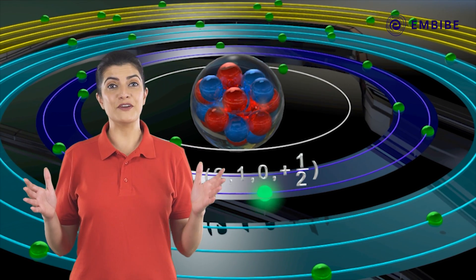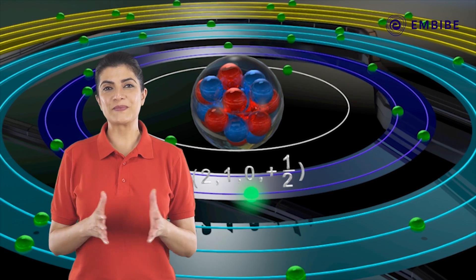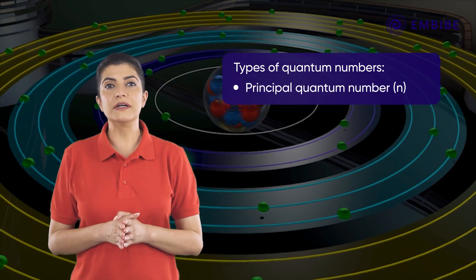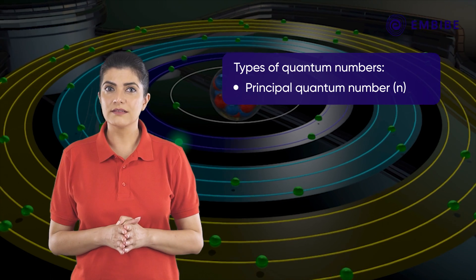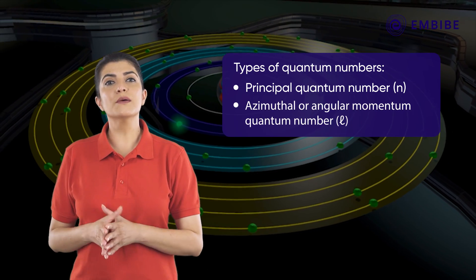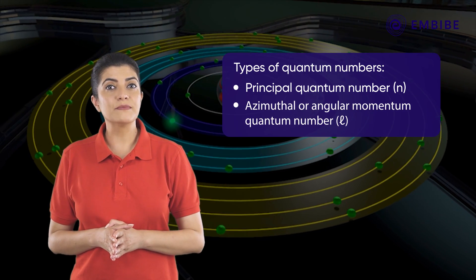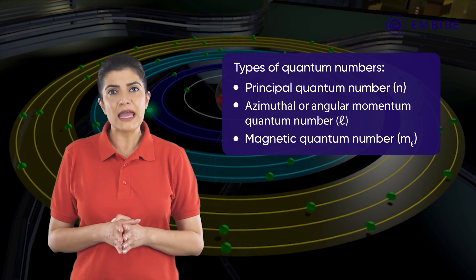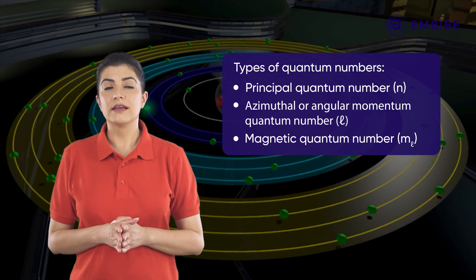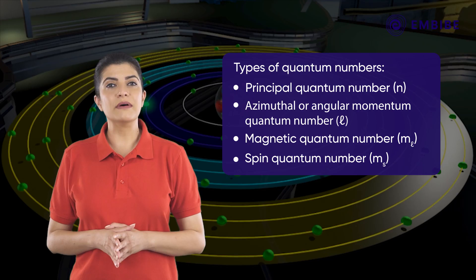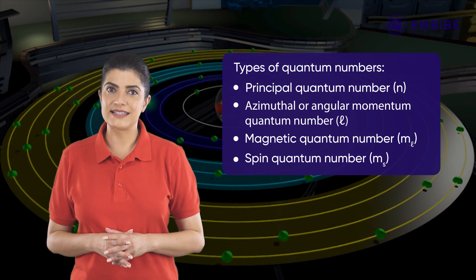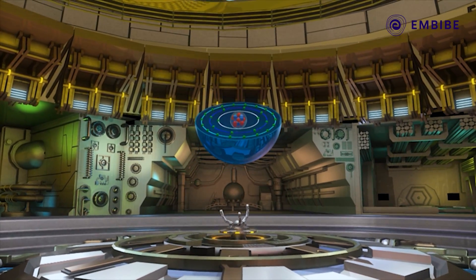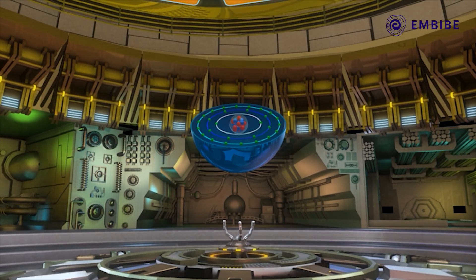Quantum numbers are any sets of integers or half integers that characterize the properties and energy states of an electron. There are four types: principal quantum number n, azimuthal or angular momentum quantum number l, magnetic quantum number ml, and spin quantum number ms.